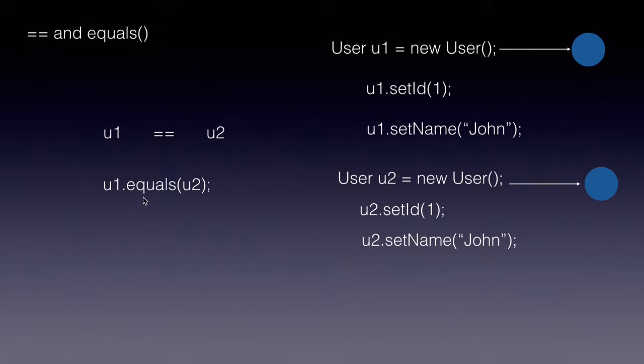This equals method is derived or inherited from the object class. The default implementation of the equals method uses the double equals operator, so it is a shallow comparison by default. So the statement u1 dot equals u2 will return a false.